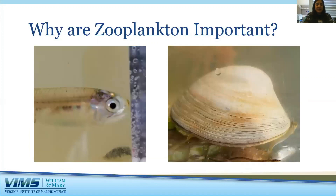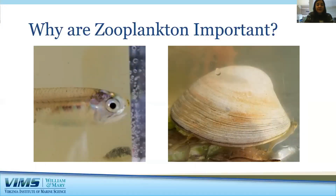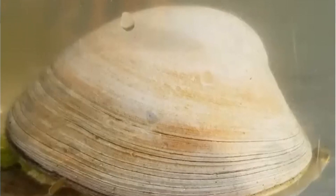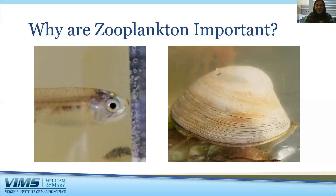Another reason why zooplankton are important is because they support many of the fishes and other animals that we rely on economically and recreationally. This small silverfish on the left-hand side is called a bay anchovy, and anchovies filter feed on plankton, so they can be a direct food source for humans but also a food source for larger fishes that we like to catch and eat, like striped bass and red drum. Shellfish are also filter feeders who feast on plankton. On the right-hand side we have a hard clam. All shellfish — including clams, oysters, mussels, and scallops — eat plankton, so if you like a nice basket of fried clam fritters, you can thank plankton.